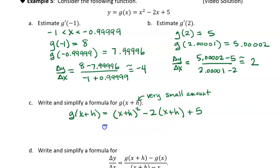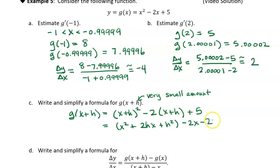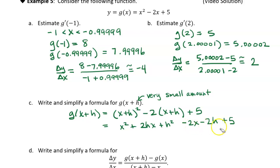Now I can simplify that by expanding. I get x squared plus 2hx plus h squared — that's from expanding x plus h squared — then distributing the negative two: minus 2x minus 2h, and then plus 5. I can remove the parentheses. The 2hx and negative 2x terms aren't like terms, so this is about as simplified as I can get for g of x plus h.